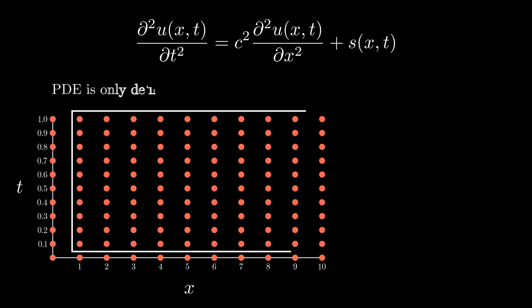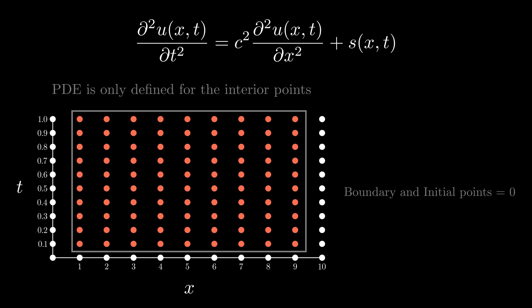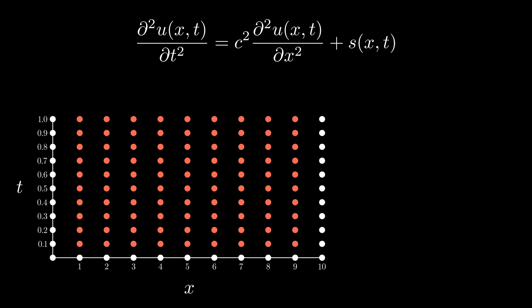What I hope to achieve with this is that now I only need to get the value of u at these finite number of points, and anything in between can be approximated via simple interpolation. Remember when I said that the PDE is only defined for the interior points, and I have to pre-define the boundaries and the initial condition. Let's fix these values to zero. We have so far discretized the domain into finite points, but the PDE is still in a continuous form.